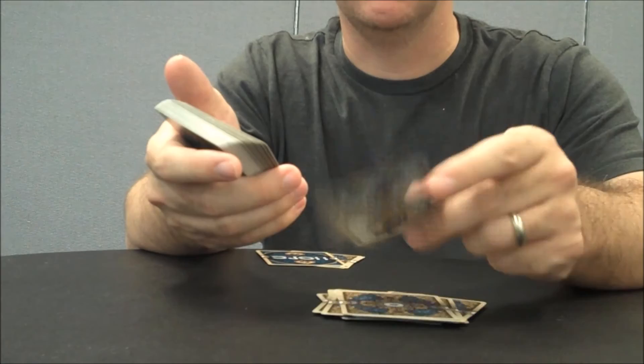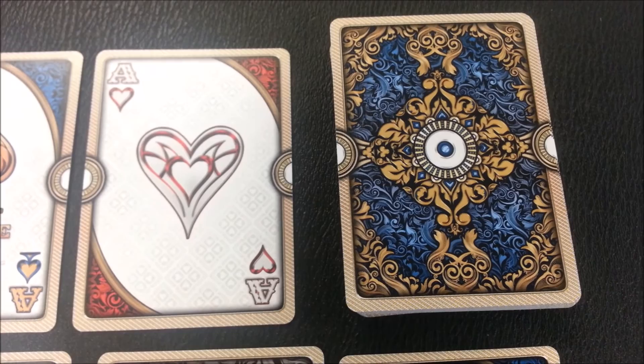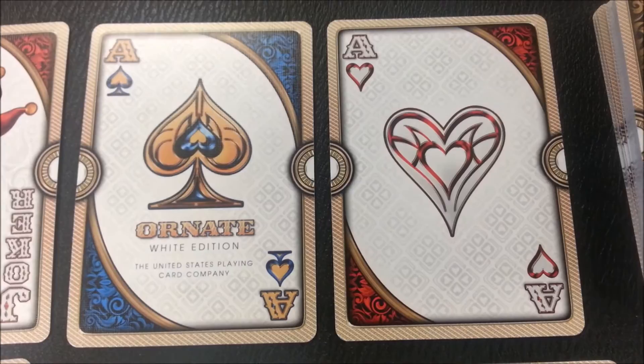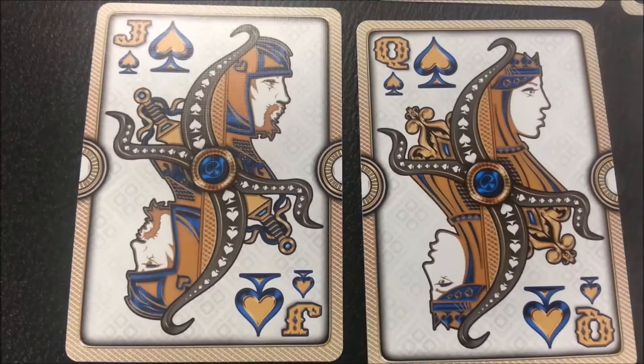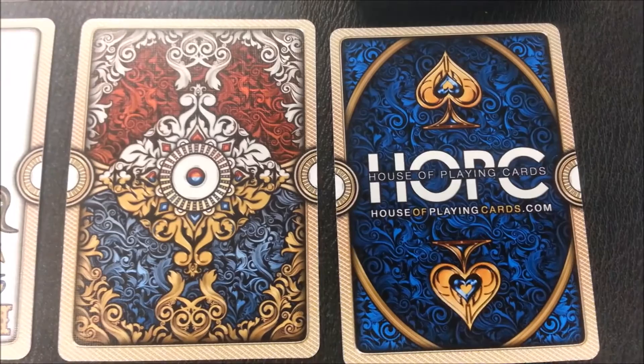So I just want to steal the camera real quick and show you a couple of the features of this deck. Here is the back design of the blue deck. Here are a few of the aces. Here are the two jokers. And here are a couple of the court cards. And of course, you can always use your own camera controls to pause and take a closer look.